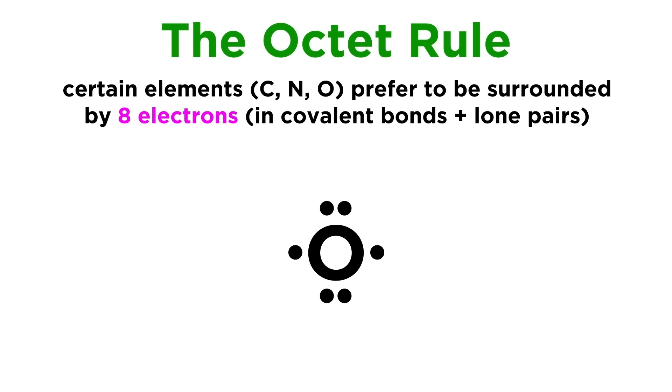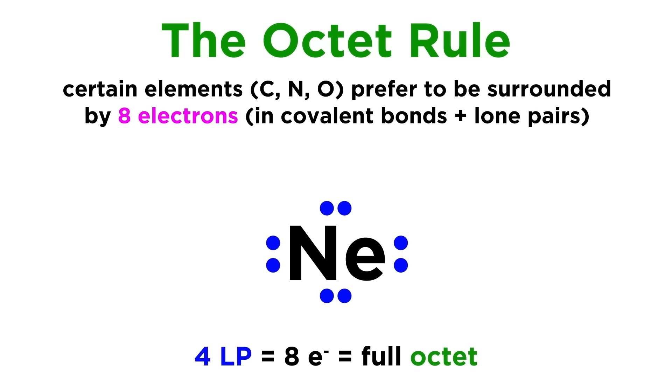Oxygen, with two lone pairs and two electrons, will need two bonds to fill its octet, and fluorine will need only one more electron and thus one covalent bond to fill its octet. Noble gases like neon already have a full octet because they have a full valence shell, which is why they don't make covalent bonds.